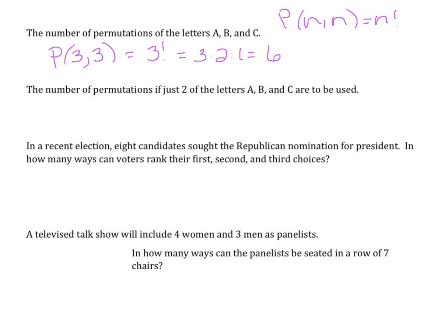The number of permutations if just two of the letters A, B, and C are used — we want P(3, 2). Using the formula, we have three factorial over (three minus two) factorial, which is three times two times one divided by one factorial, which is just one. So this is equivalent to six as well.